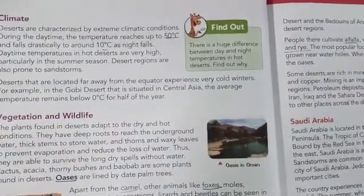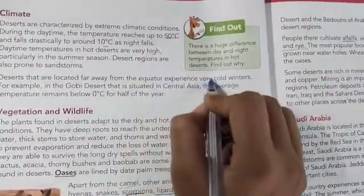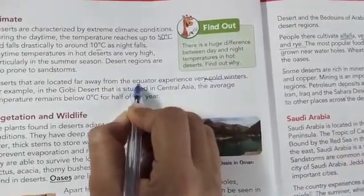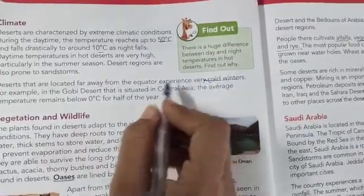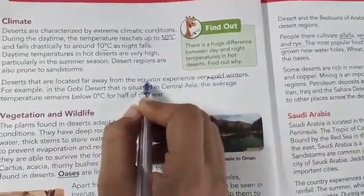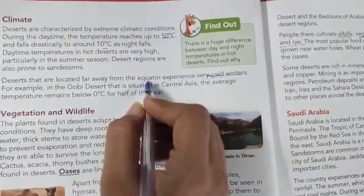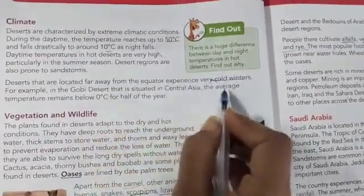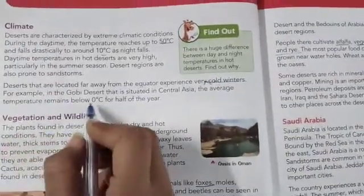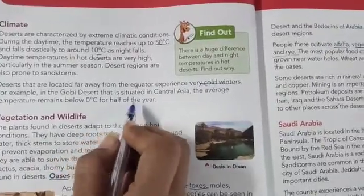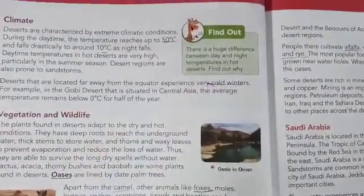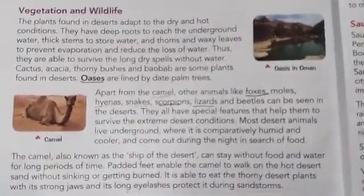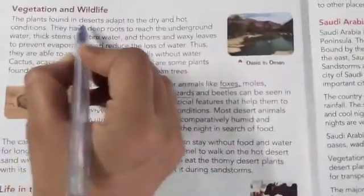Deserts that are located far away from the equator experience very cold winters. For example, the Gobi Desert, situated in Central Asia, has an average temperature that remains below 0 degrees Celsius for half of the year.